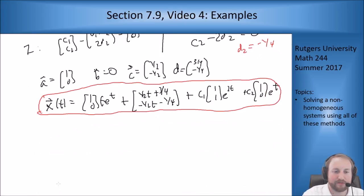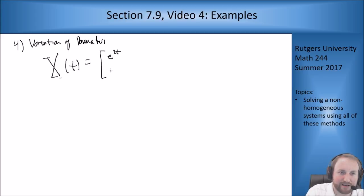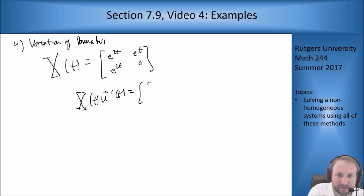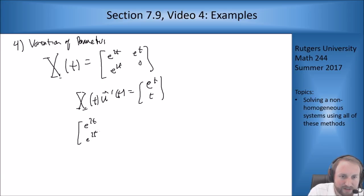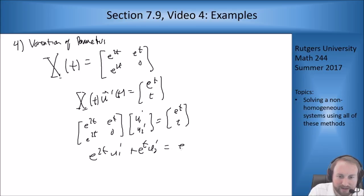Finally, variation of parameters. For this I need a fundamental matrix Φ(t), formed by stacking the homogeneous solutions: Φ(t) = [e^{2t}, e^t; e^{2t}, 0]. I want to solve Φ(t)·u'(t) = G = [e^t; t]. Writing this out: e^{2t}·u1' + e^t·u2' = e^t and e^{2t}·u1' = t.